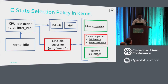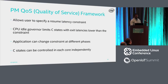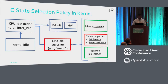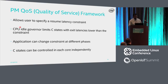We specify the exit latency constraint using a framework called Power Management Quality of Service, or PM QoS. This is a very simple interface — you just provide a number in microseconds. PM QoS interfaces with the governor and provides it the constraint. The governor uses the constraint to compare it with exit latency.